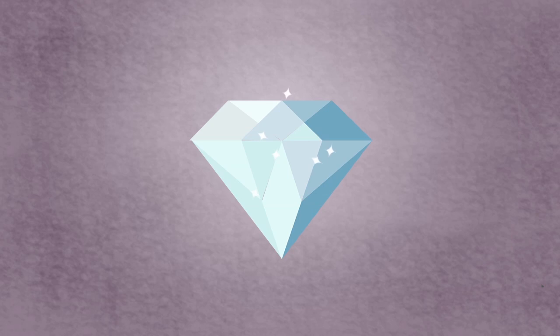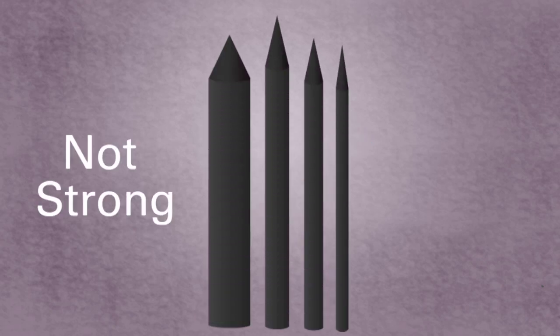A diamond is very shiny, remarkably strong, and does not conduct electricity. Graphite is black, not nearly as strong as diamond, and can conduct electricity.